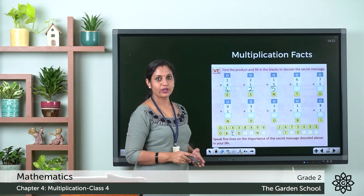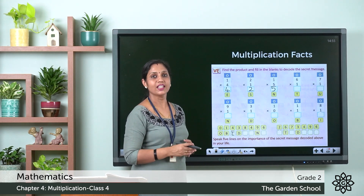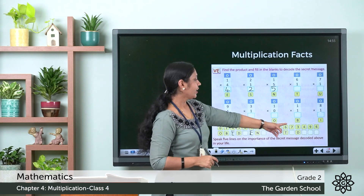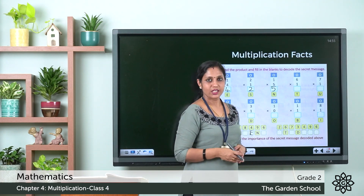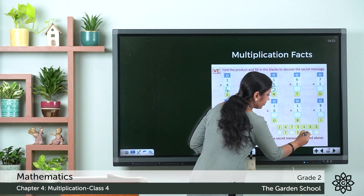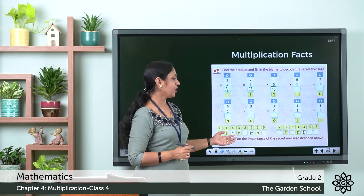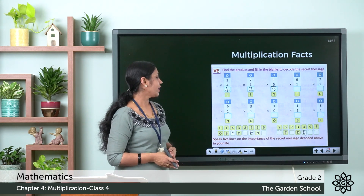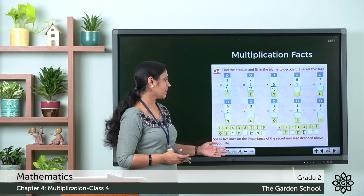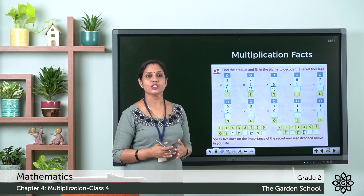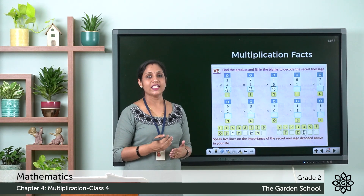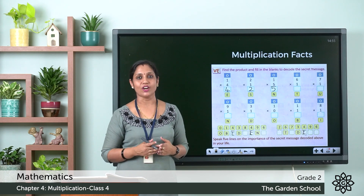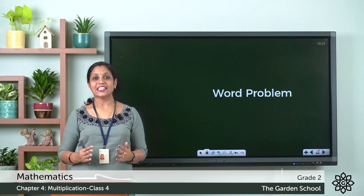Wherever the number 4 appears, you write the letter E below it. After decoding the secret message, you also need to speak 5 lines on the importance of that secret message in your life. So first solve the problems, then decode the message, and then prepare your 5 lines.